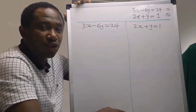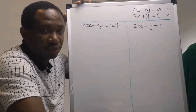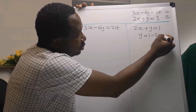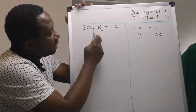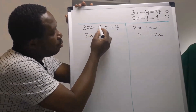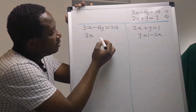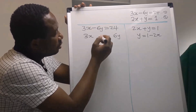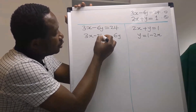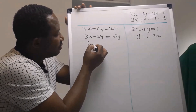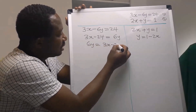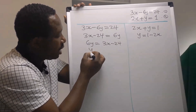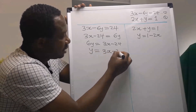Next we are going to make y the subject for both equations. For equation one, y is 1 minus 2x. For equation two, I move minus 6y across to get plus 6y, and move 24 across to get minus 24. So 6y equals 3x minus 24, and therefore y equals (3x minus 24) divided by 6.